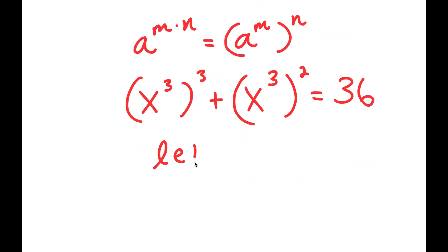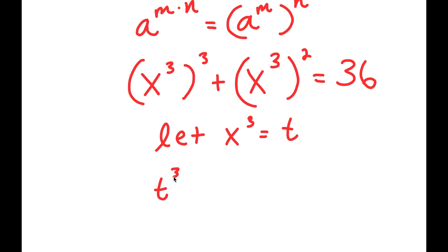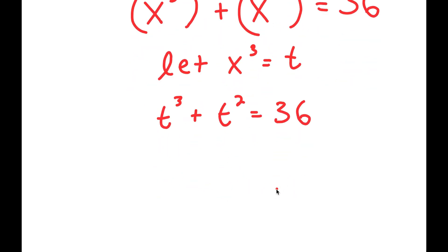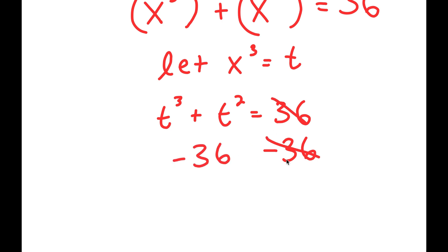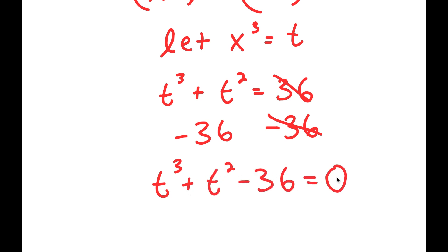Now I'm going to let x to the power of 3 equal the variable t. So I get t to the power of 3 plus t squared is equal to 36. Subtracting 36 from both sides gives t to the power of 3 plus t squared minus 36 is equal to 0.